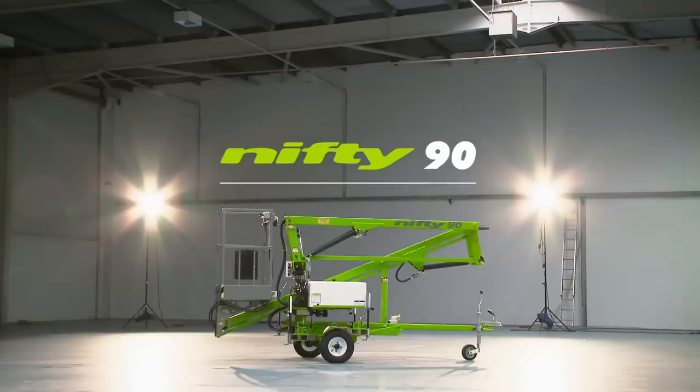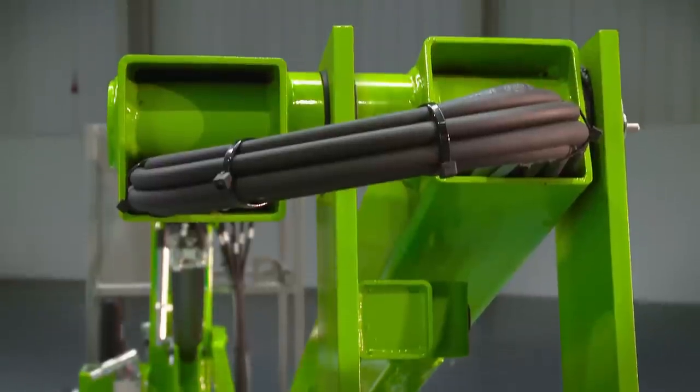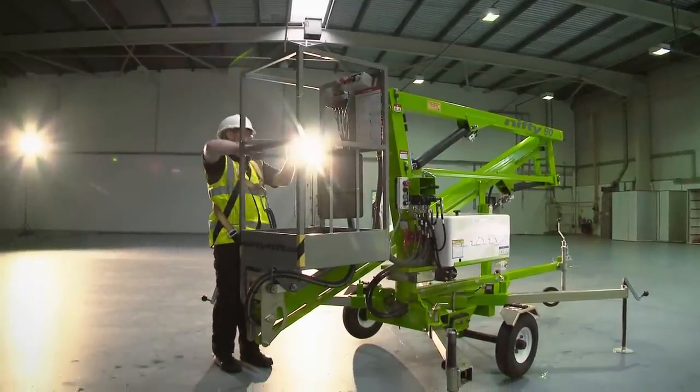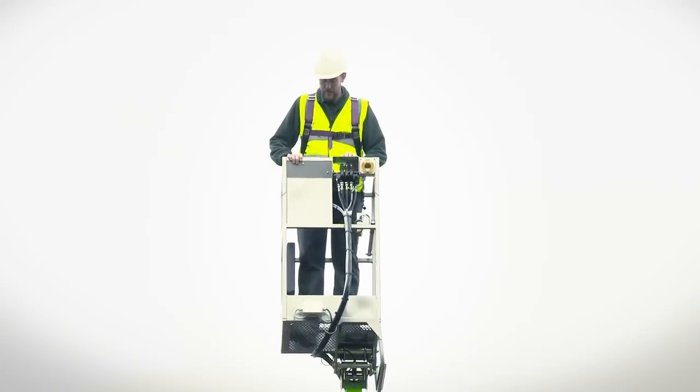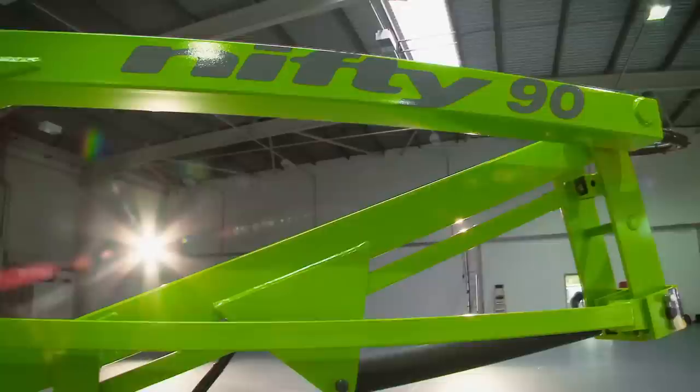So that's the Nifty 90, it's cost effective, easy to use and simple to maintain. Suitable for both indoor and outdoor use, its outreach makes it ideal for working over racking or machinery. Uncomplicated hydraulic controls make even first time operation straightforward.